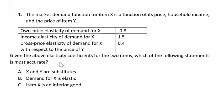Given the above elasticity coefficients for the two items, which of the following statements is most accurate? A: X and Y are substitutes. B: Demand for X is elastic. C: Item X is an inferior good. The cross price elasticity is positive, indicating that as the price of Y increases, more of X is demanded, making X and Y substitutes. A is correct.